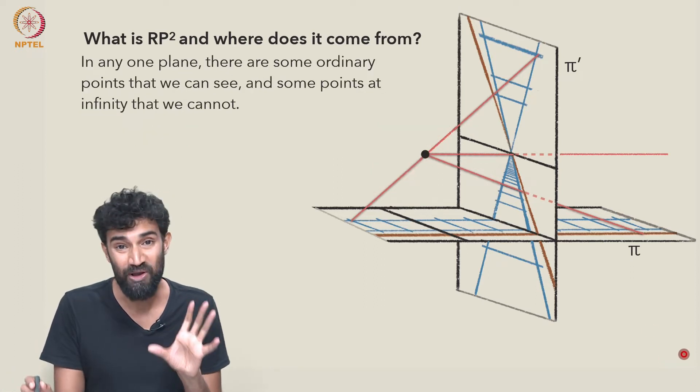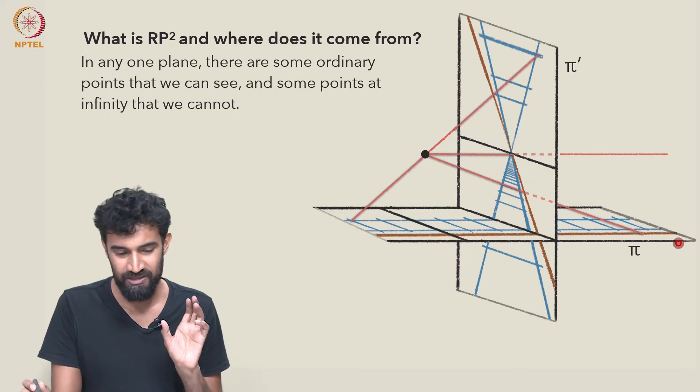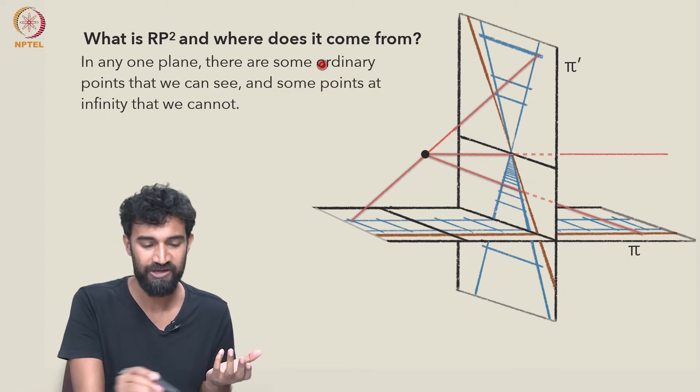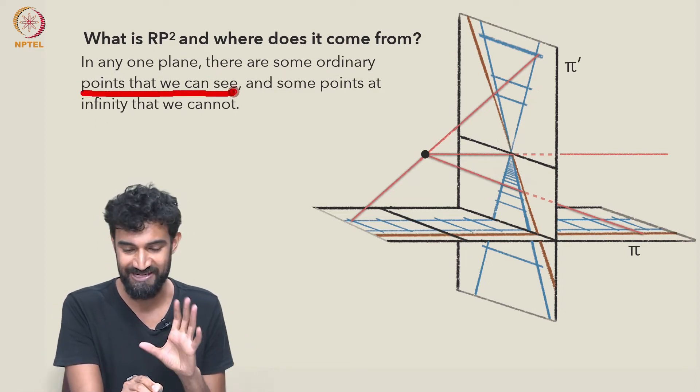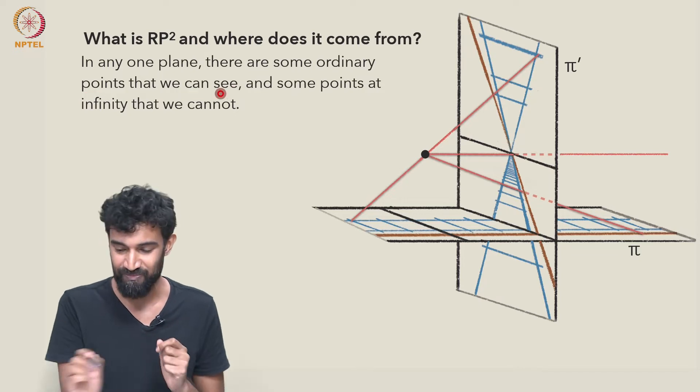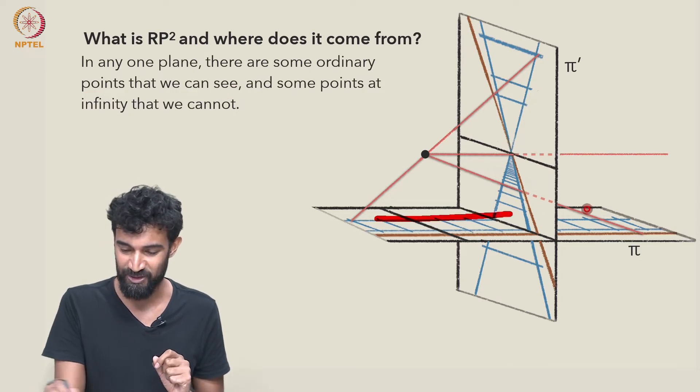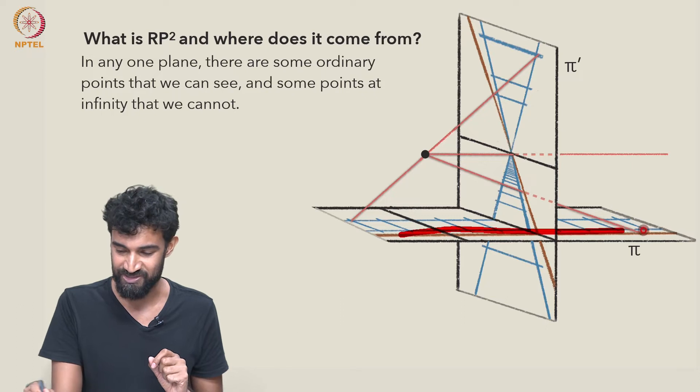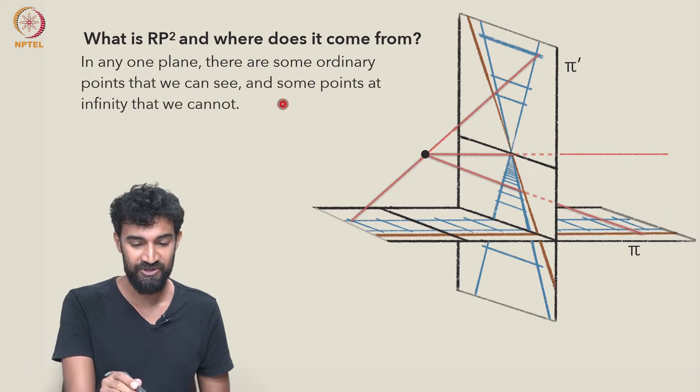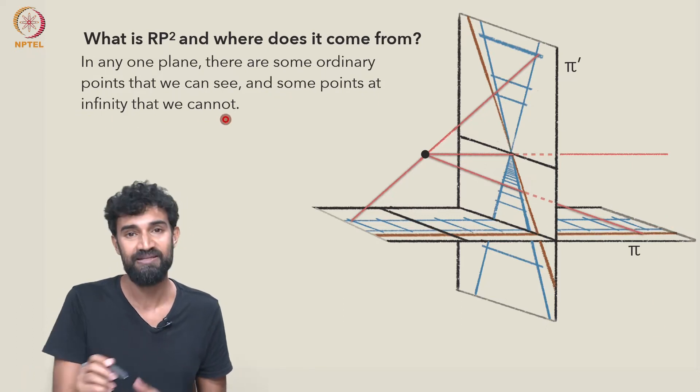So in any one plane, like π, there are some ordinary points that we can see perfectly well, like the points that make these railroad tracks or this brown rail next to that. But there's also some points at infinity that we can't see.